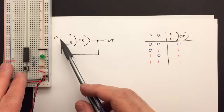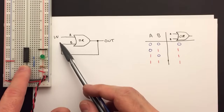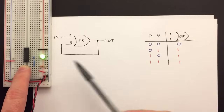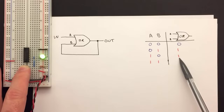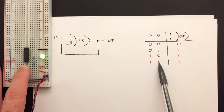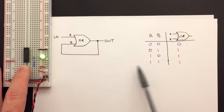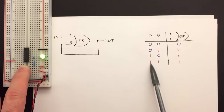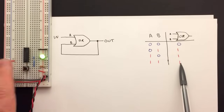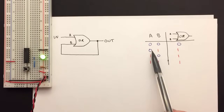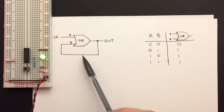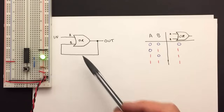Now let's see what happens if we change the input to a one by pushing the button. If we push the button, the input's a one — so one and zero gives us a one as the output, and we see the output comes on. But now this output is feeding back into input B, so B is a one as well. So we've got a one in A and a one in B, and the output is still one. But now if I let go of the button, A is zero, B is still one, and so the output is still one. This stays on even though I've let go of the button.